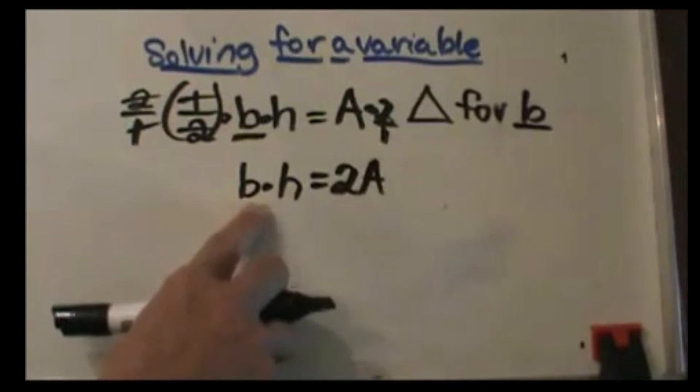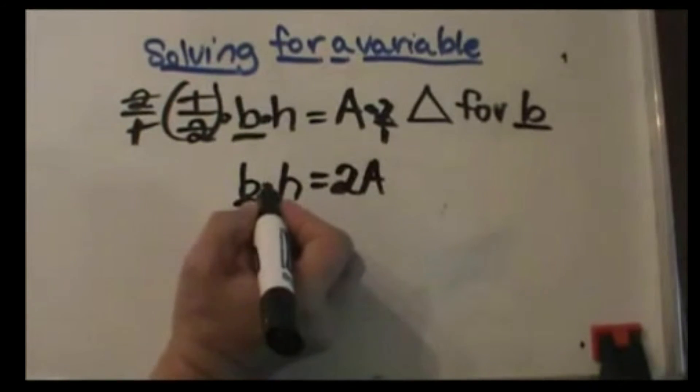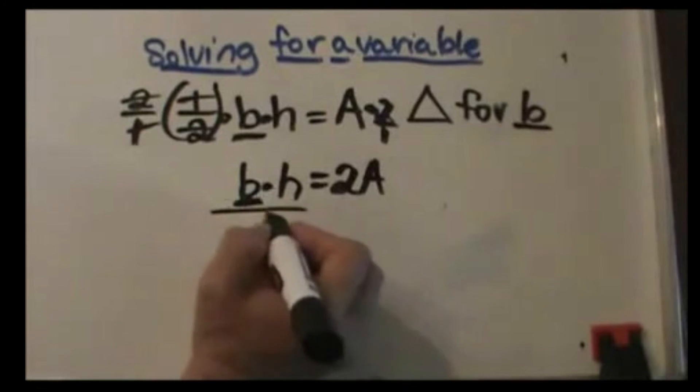Now we've got to get rid of the h because we're trying to get the b by itself. This is multiplication. How do we get rid of multiplication? We divide.